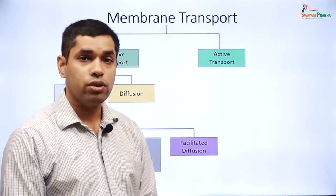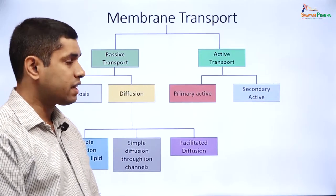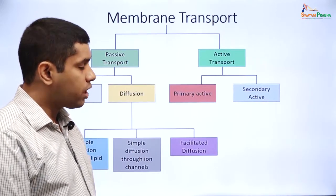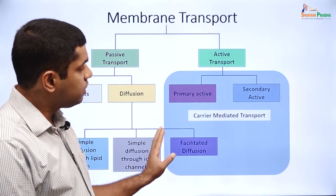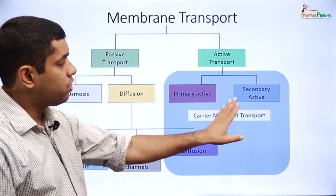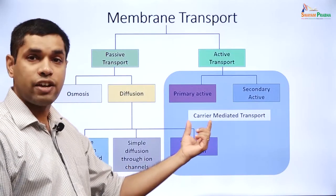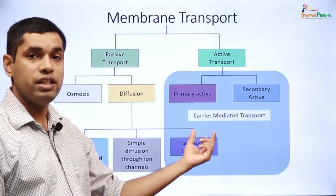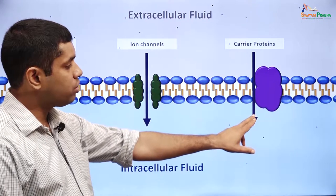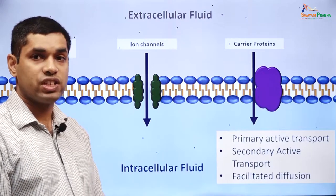When we look at active transport, we could further classify it into primary active as well as secondary active transport. Primary active, secondary active, as well as facilitated diffusion all require a carrier protein and therefore they are called carrier-mediated transport. So when we talk about carrier proteins, this applies to primary active transport, secondary active transport, as well as facilitated diffusion.